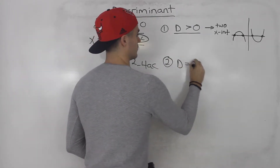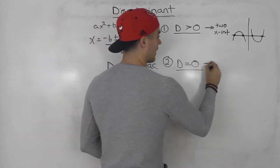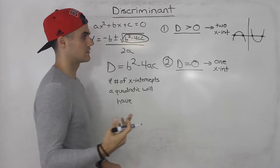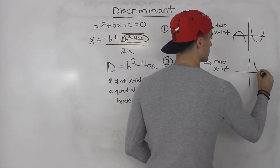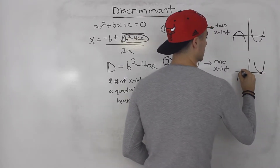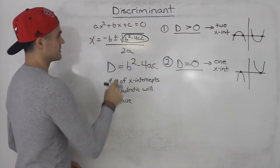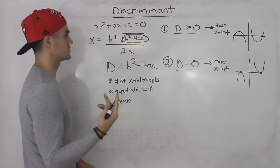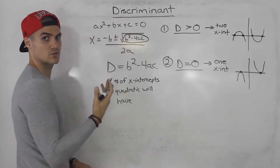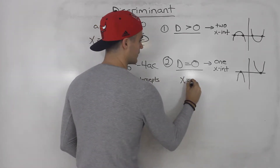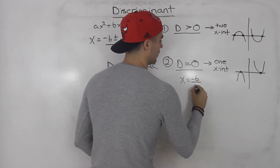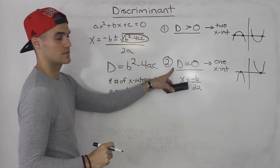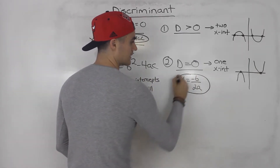If the discriminant is equal to zero, there's only going to be one x-intercept, and that x-intercept is going to be the vertex of the parabola. Because if b squared minus 4ac is zero, the square root of zero is just zero — plus or minus zero goes away — and you're left with just negative b over 2a. So the one x-intercept equals negative b over 2a.